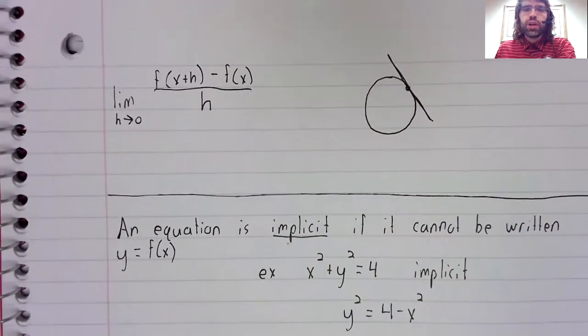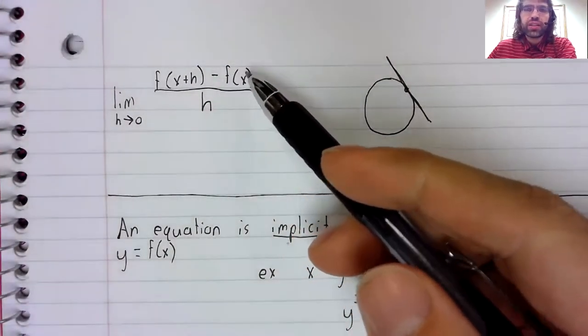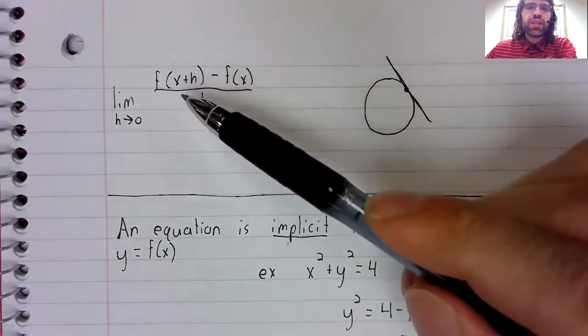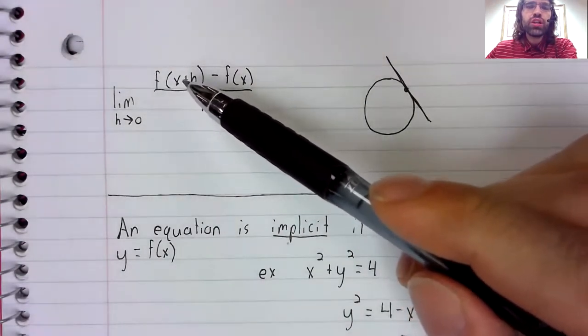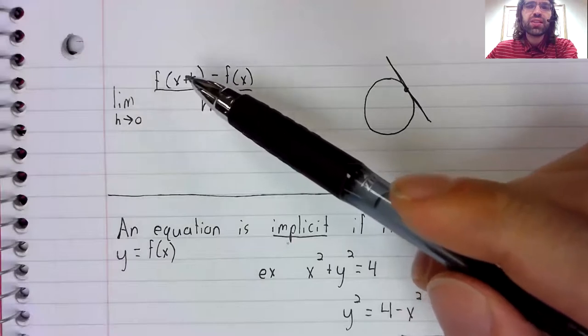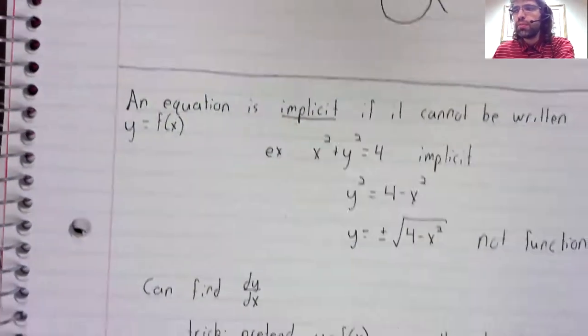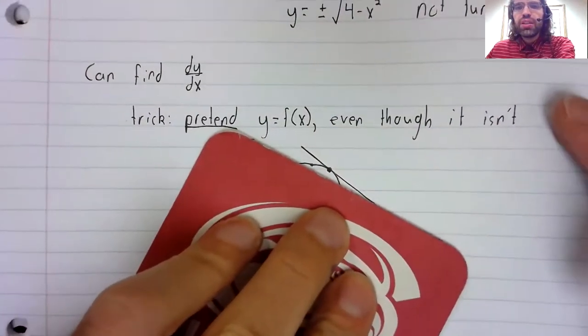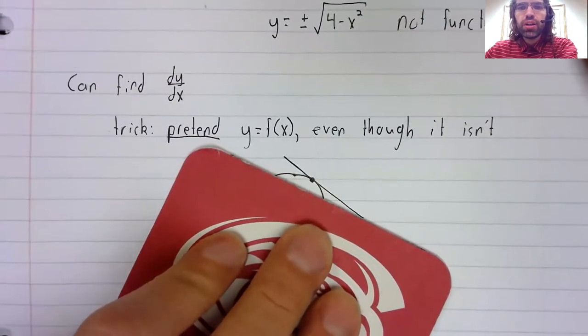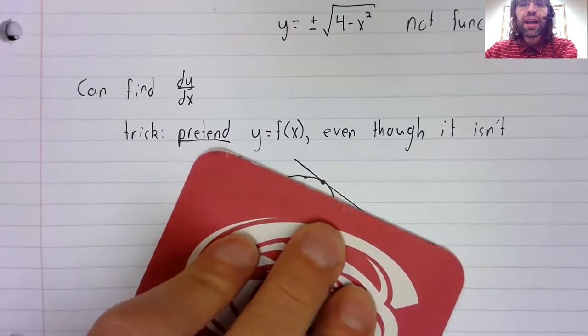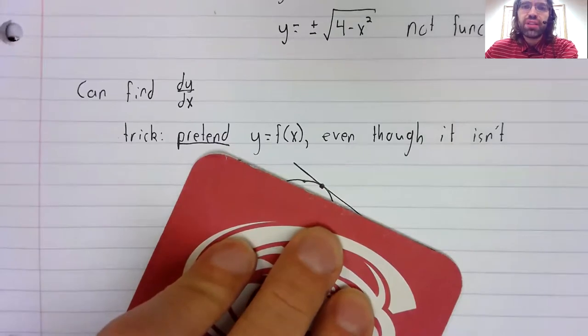You know, using our definition, the fact that this definition has function notation in it isn't a problem, because I've covered up the parts of this graph that stopped it from being a function.